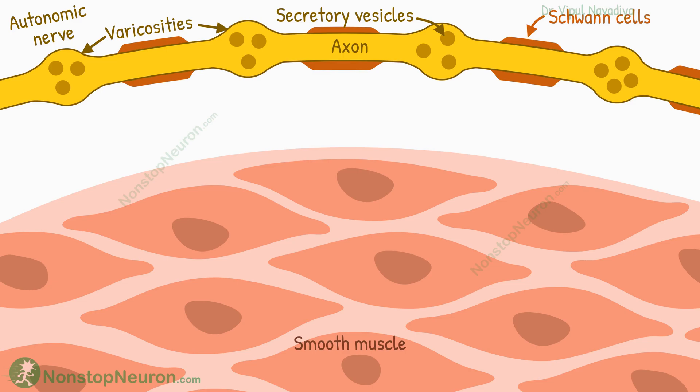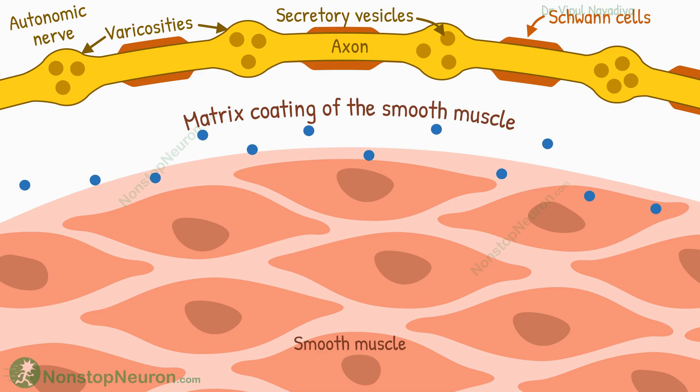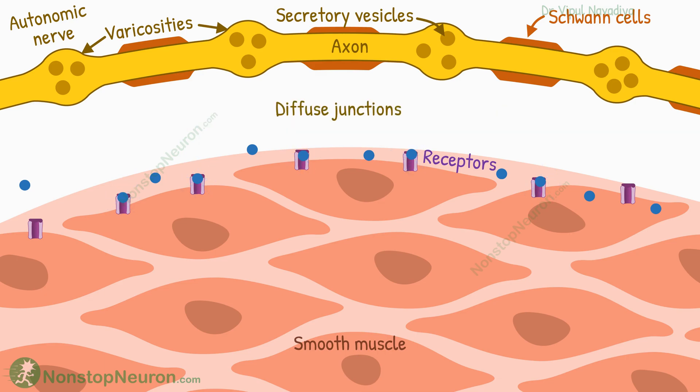These varicosities do not make direct contact with the muscle membrane. Instead, they secrete neurotransmitters into the surrounding matrix coating of the smooth muscle. From here, the neurotransmitters diffuse toward the smooth muscle cells. The membrane of smooth muscle has nothing special to receive the signals; rather, the receptors are spread over the cell membrane. The transmitters stimulate these receptors to produce a response. Such junctions are called diffuse junctions.